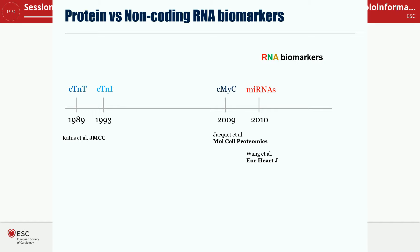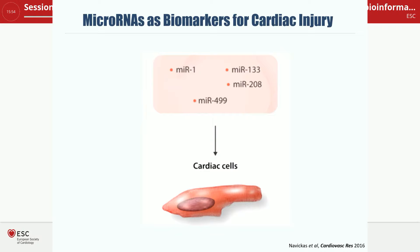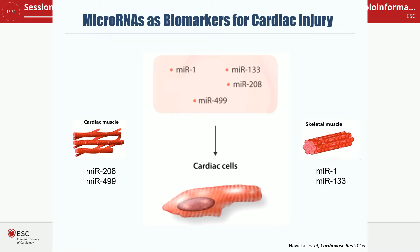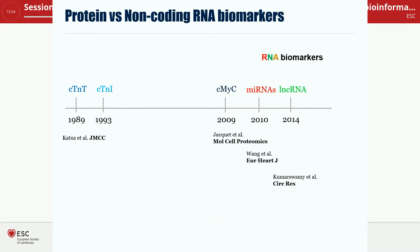The field has moved on — rather than just looking at cardiac proteins, since 2008 there has been a string of literature looking at different RNA biomarkers. The first RNA biomarkers were microRNAs, and for cardiac microRNAs, four are of interest: microRNA-208 and microRNA-499, which are relatively cardiac muscle-enriched, and microRNA-1 and microRNA-133, which are also present in skeletal muscle but released upon cardiac injury. It didn't take long before the first long non-coding RNA was described as a biomarker for cardiac disease.